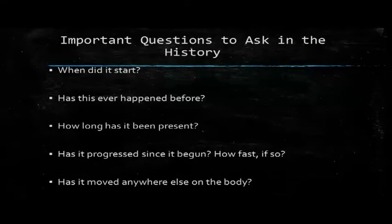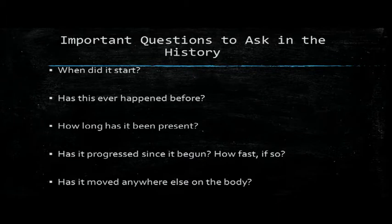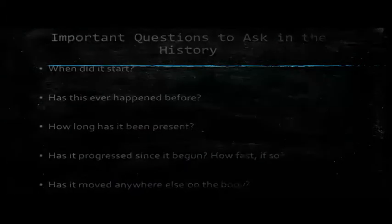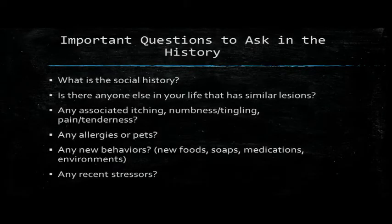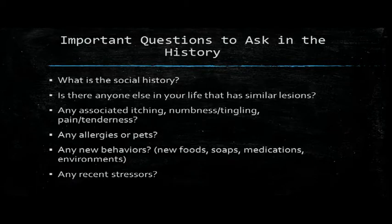You have your important questions in your history — history is so important. When did it start? Has it happened before? How long has it been present? Has it progressed? Has it moved anywhere else on the body? Social history is really important: is there anyone else in the house with similar lesions? Any pain, itching, tenderness, allergies to pets, new behaviors? We often forget about medications — even simple ones like NSAIDs. Recent stressors might also be relevant.